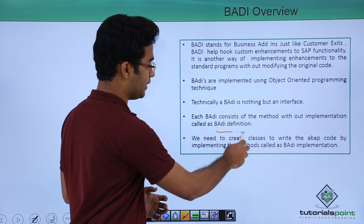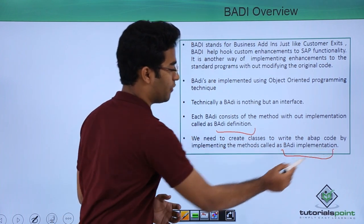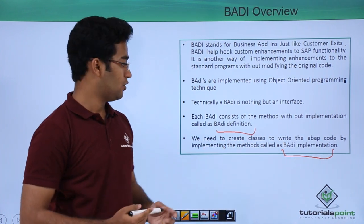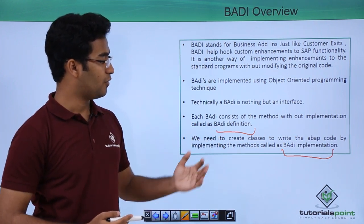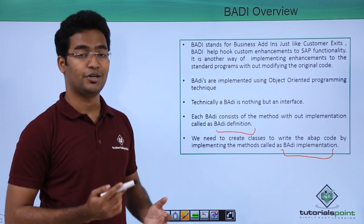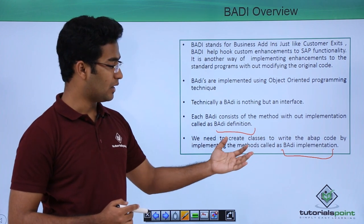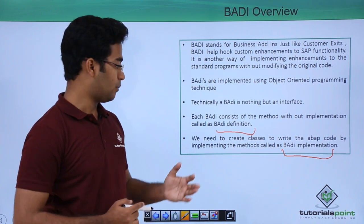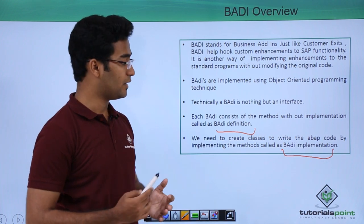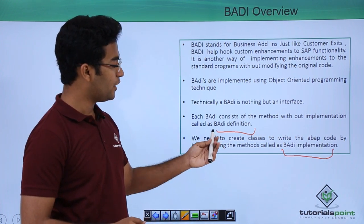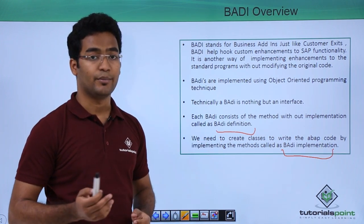We can provide our BADI definition and then we can also provide our BADI implementation. Each BADI consists of a method without the implementation, it is called as BADI definition. We need to create classes to write our ABAP code by implementing the method; that is called as BADI implementation.